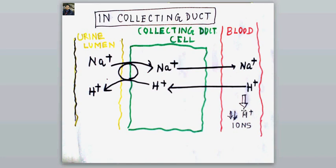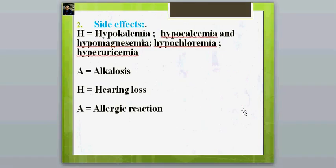The important side effects of furosemide are: hypokalemia, due to increased sodium-potassium exchange at the collecting duct; hypocalcemia and hypomagnesemia, due to loss of the repulsive force at the thick ascending limb of the loop of Henle; hypochloremia; and hyperuricemia, because furosemide prevents excretion of uric acid from the proximal convoluted tubules. It also causes loss of hydrogen ions leading to alkalosis, and other side effects include hearing loss and allergic reactions.